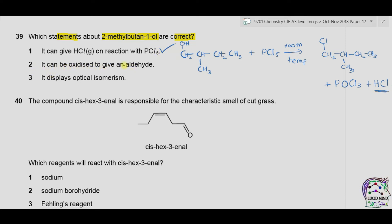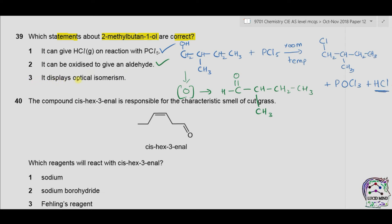Statement 2: It can be oxidized to give an aldehyde. Since we have a primary alcohol, primary alcohol can be oxidized to form an aldehyde — statement 2 is correct. Statement 3: It displays optical isomerism. For optical isomerism a chiral carbon must be present — a carbon with four different groups directly attached. This carbon is attached to one hydrogen, one CH3, one CH2OH, and one CH2CH3, so this is a chiral carbon and the molecule displays optical isomerism. All three statements are correct, so the answer is A.